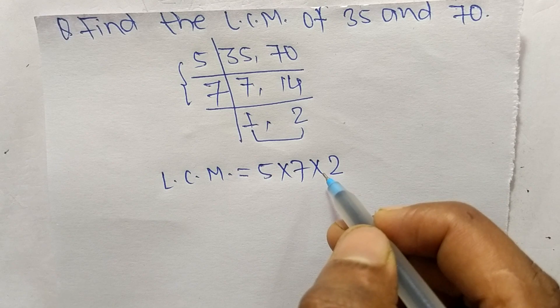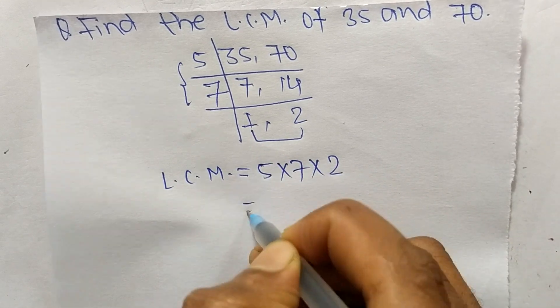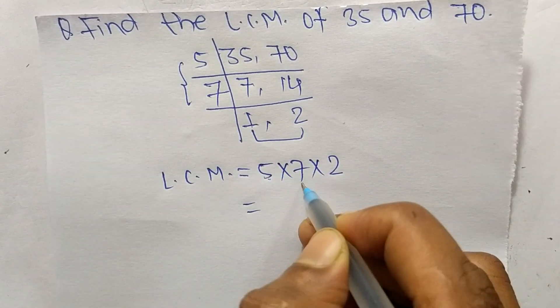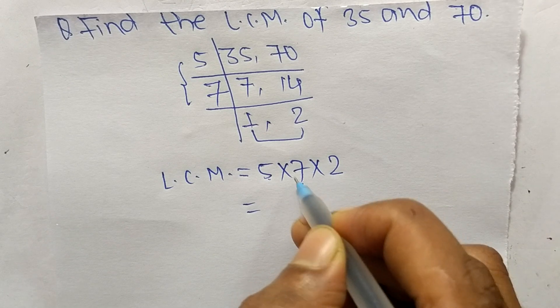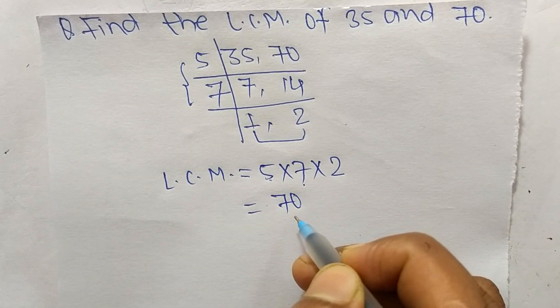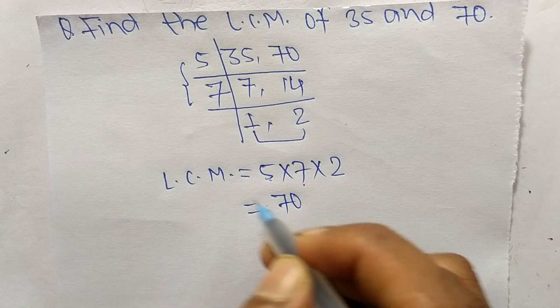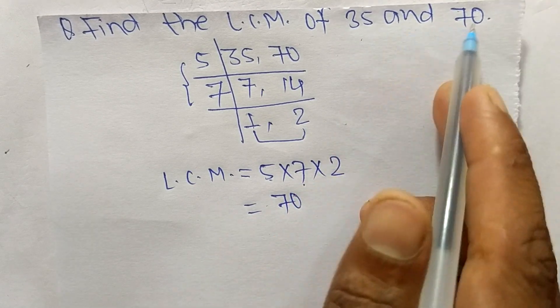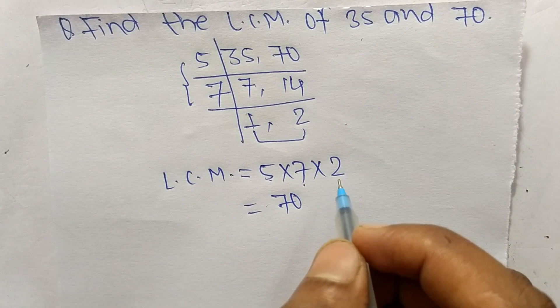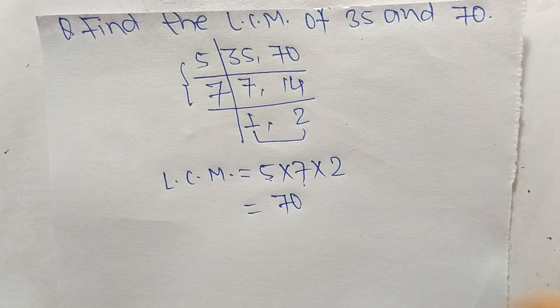5 times 7 means 35, 35 times 2 means 70. So 70 is the LCM of 35 and 70. So this much for today and thanks for watching.